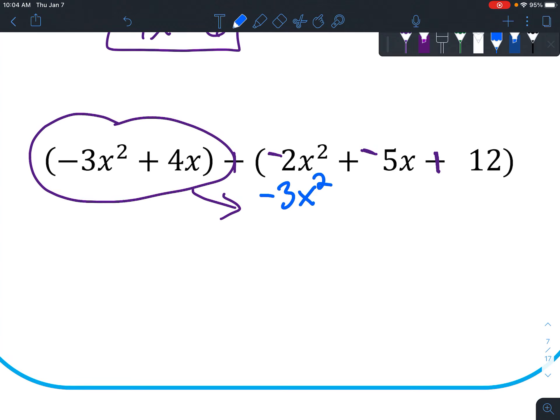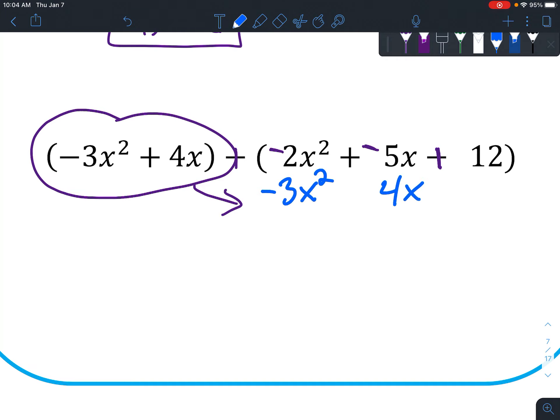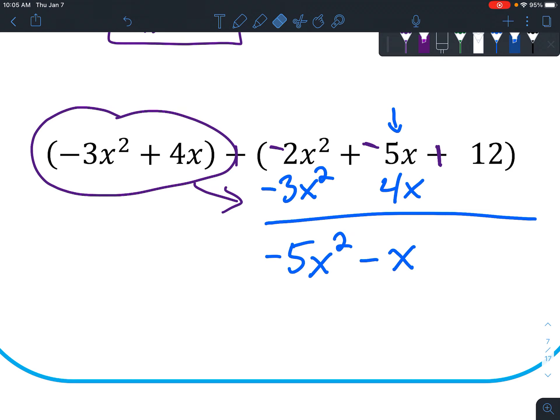So we've got negative 3x squared, and we have a 4x. Since there isn't a regular integer, we don't have to line anything up with that. Negative 2 plus negative 3 is negative 5 x squared. And think of it as negative 5 plus 4. So we get negative 1. If it's negative 1, you don't actually have to write the 1. Generally in math, if you just see a variable, then it's automatically assumed that there's a 1 there. Because it's just 1x, right? And it's just sitting there. And then plus 12.